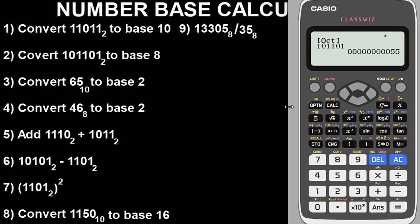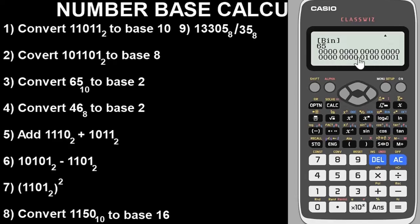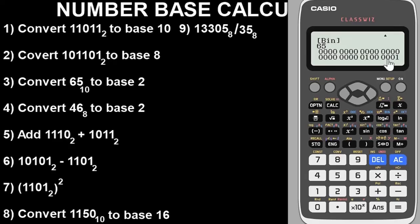Let's wipe this and go back to Decimal, which is base 10. The previous number is still shown, so switch to Decimal mode. Now input 65, then press equals. To change this to base two, press the Binary button. The result in base two is 1000001. So 65 base 10 equals 1000001 base two. To go back to base 10, press the Decimal button. That's question three.